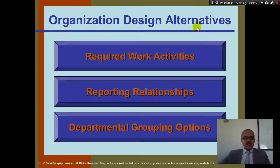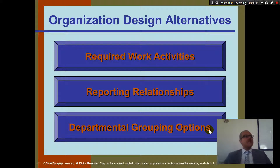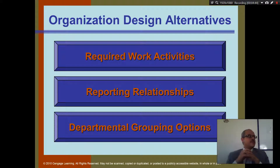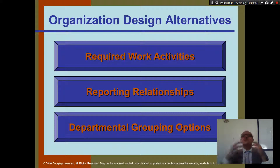Organization design alternatives include required work activities, reporting relationships, and departmental grouping options. When you decide your company structure, think about what activities need to be done. Like when you cut a chicken — one person cuts the head, one person cuts the wings. Do they need to report to each other? Do they just need to sit next to each other? Do they need to talk to each other?